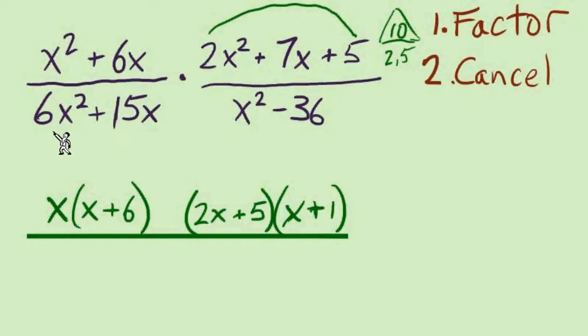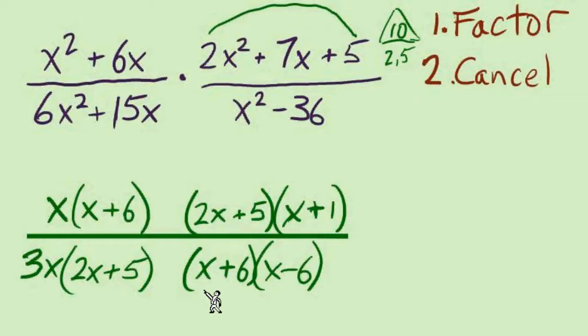So anyway, we'll keep going with this one. Bottom left, can we factor this binomial? Always looking for the GCF first. 3x we can divide out from each term and we are left with 2x plus 5 in parentheses. And bottom right, x squared minus 36, a binomial that is a difference of squares, and it's factored as x plus 6 times x minus 6.